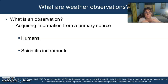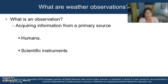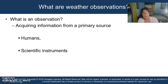We have talked about time and place for observations. Let's talk about the specifics of qualitative and quantitative observations. An observation is acquiring information from a primary source — that can be humans, that can be scientific instruments. Let's talk about the differences between those two very briefly.